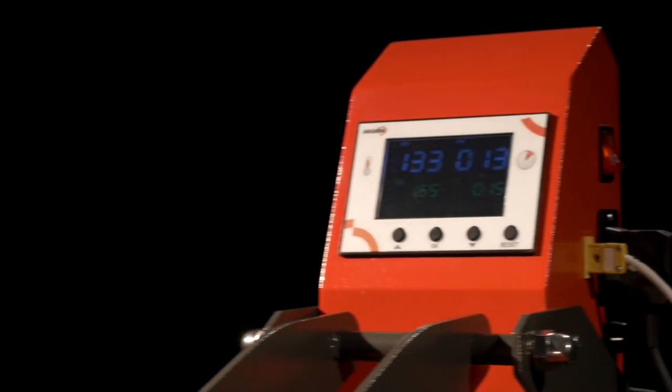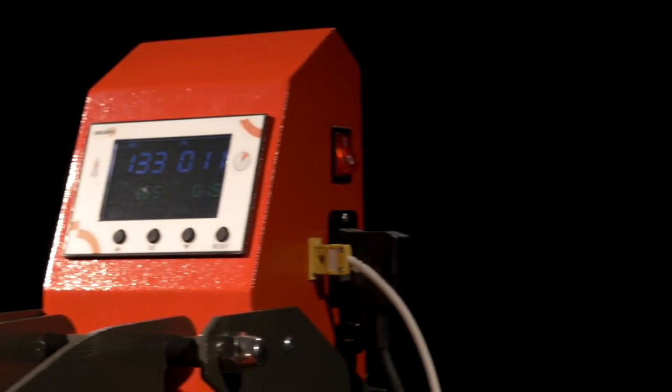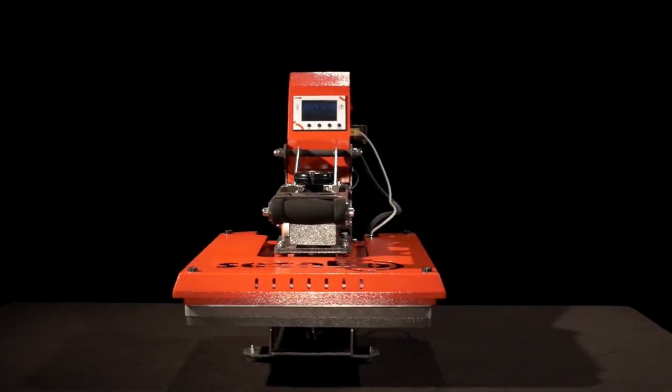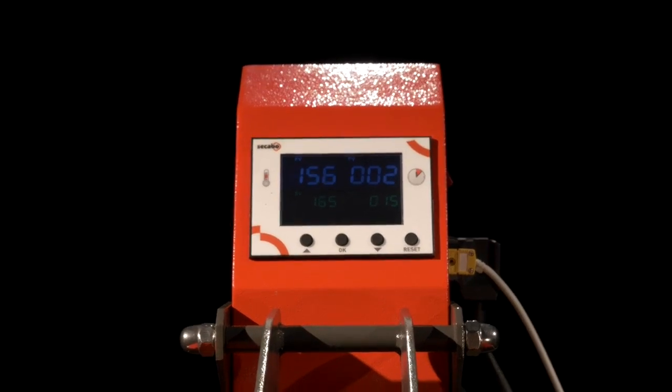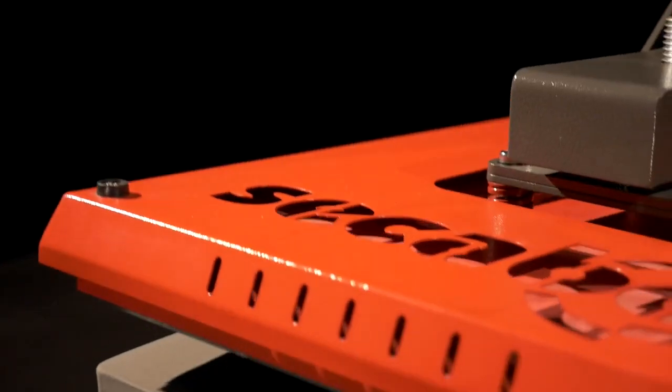The digital controller used in the Sakabo TC5 and TC7 models regulates the heat plate's temperature and controls the transfer's press duration. The maximum temperature is 225 degrees celsius, the maximum time is 999 seconds.